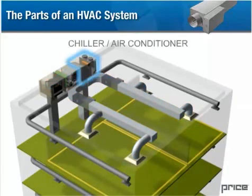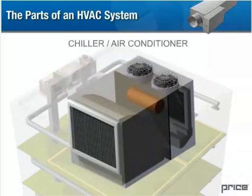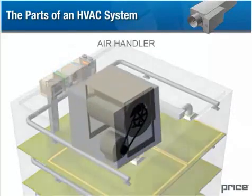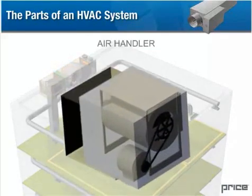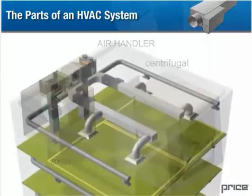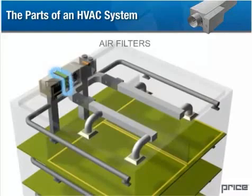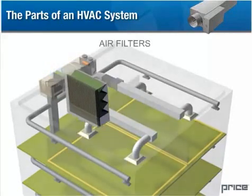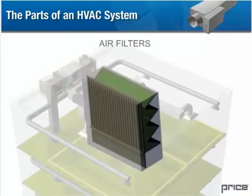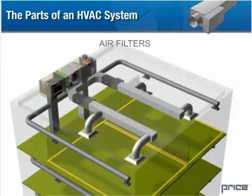The chiller or air conditioner utilizes heat exchangers and circulated fluid or gas to cool the air that is passed through it. The air handler is a fan or a blower that moves air throughout the building's ductwork. Axial or centrifugal fan types may be found in the air handler. Air filters: depending on the requirements of the occupants and the activities in the building, various grades of air filters are used in the system. General purpose air filters will be included in the air handler itself, while more sophisticated filters, such as HEPA filters, may be used in the downstream ductwork.